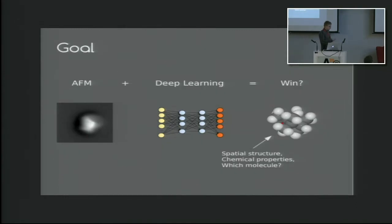So our goal is to combine AFM with deep learning to try to get more precise properties from the AFM. The kind of things that we are interested in are, for example, spatial structure, the positions of the atoms, chemical properties like the electrostatic elements of the atoms, and maybe even tell which molecule we have imaged.